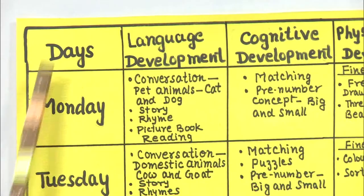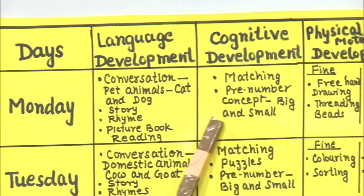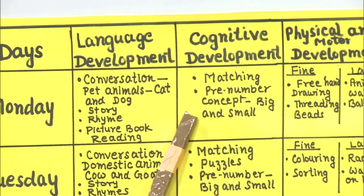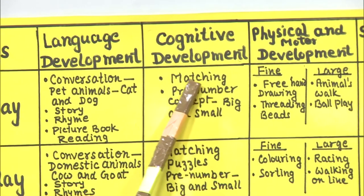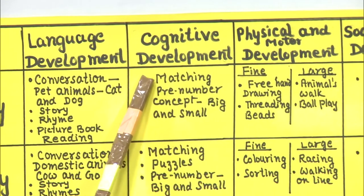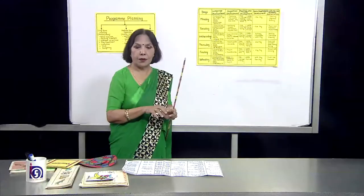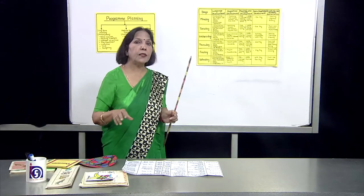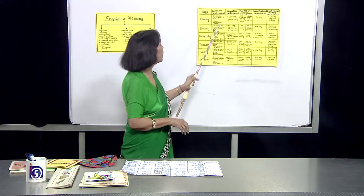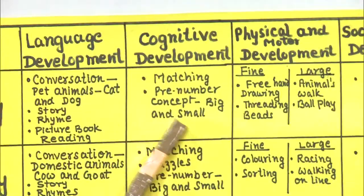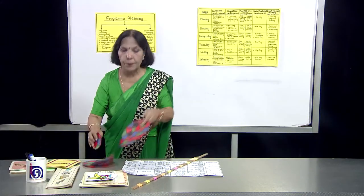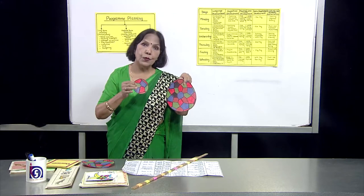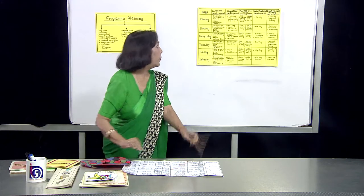On Monday, for cognitive development, the first activity is matching — matching pictures of animals. Then pre-number concept: big and small.